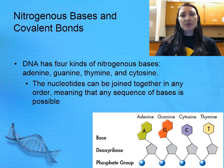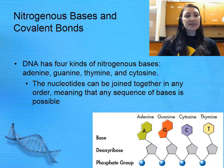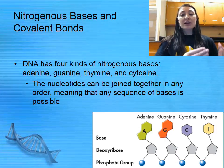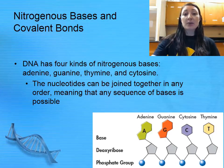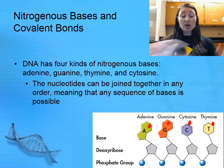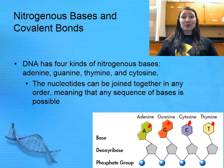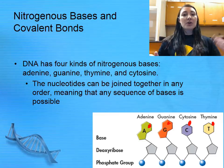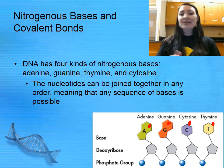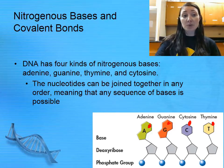As a review from our previous lecture, DNA has four different nitrogenous bases: adenine, guanine, thymine, and cytosine. The nucleotide order can be different. In this example, we can see adenine, guanine, cytosine, and thymine — that is the order of the bases in that nucleotide sequence. The order could just as easily be adenine, adenine, adenine, adenine. So any sequence of bases is possible.